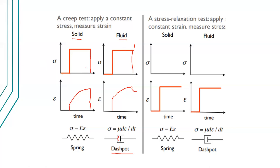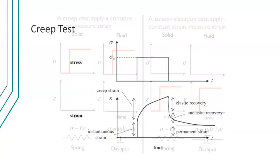Now, what happens if you have a viscoelastic material that exhibits both solid and fluid properties? Before examining that, another test you can apply is the stress relaxation test. It's the opposite of the creep test: instead of applying a constant stress, you apply a constant strain — you stretch a material and hold it — and then measure the stress over time. The question is: how will the stress behave if the material is solid, fluid, or viscoelastic?